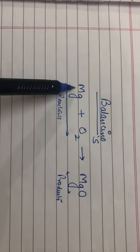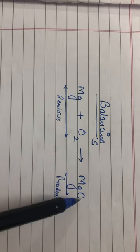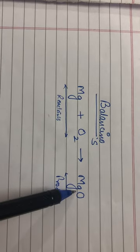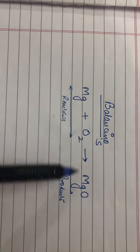Now let us see, magnesium, there is one atom on the reactant side and there is one atom on the product side as well. So magnesium is balanced in this chemical equation.